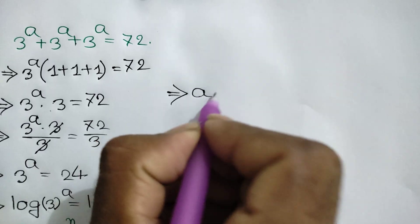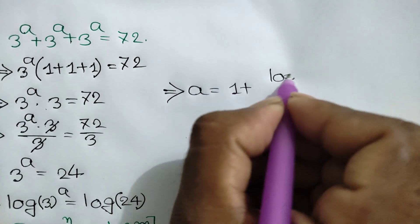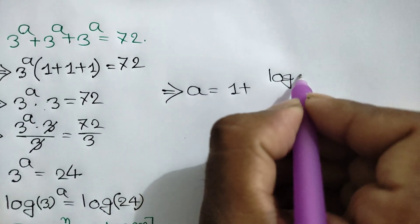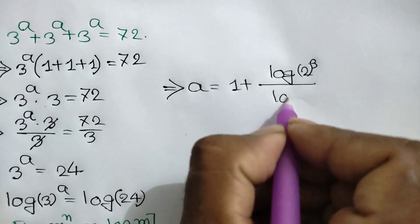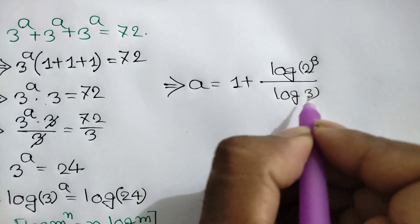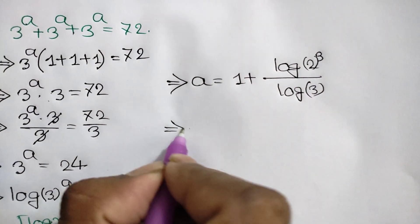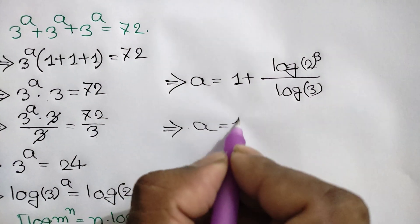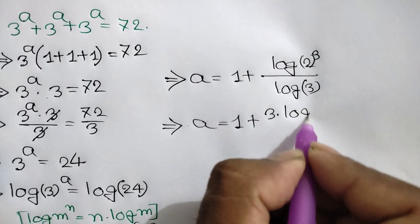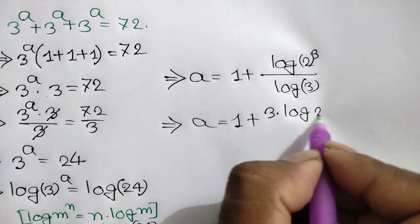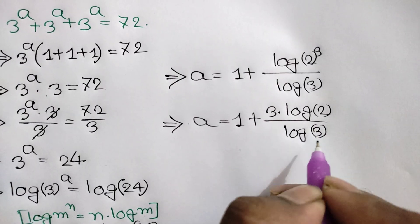Now log of 8 can be written as log of 2 cubed over log of 3. Applying the power rule, a is equal to 1 plus 3 times log of 2 over log of 3.